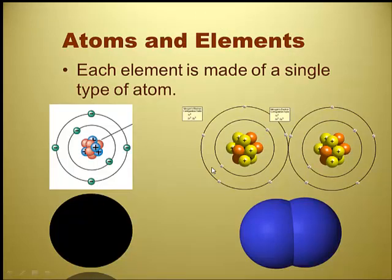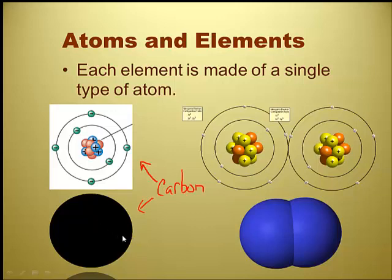Atoms and elements. Every element on the periodic table is made up of a single type of atom. The one on the left is elemental carbon — it's only made up of one type of atom, a carbon atom, with six protons, six electrons, and six neutrons in the center. The picture on the right is also an element — it's called a diatomic element, 'di' meaning two, because that is elemental nitrogen gas. Even though it's an element and there are two atoms bonded together, they're the same type of atom. It's a diatomic.